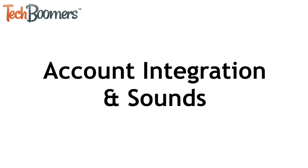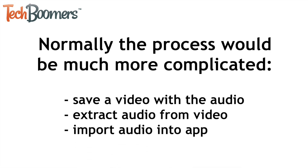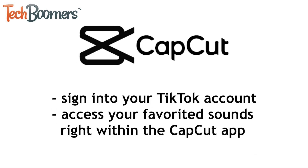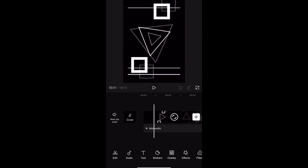The first is account integration and sounds. When editing a video to post on TikTok but using a separate editing app, you typically have to save the audio you want to use, extract it, and do all this complicated stuff just to be able to edit your video along with the audio you want to use. With CapCut, you can actually sign into your TikTok account and then pull your list of sounds you favorited on TikTok right into the CapCut app. This makes it so easy to access the audio tracks you want to use.